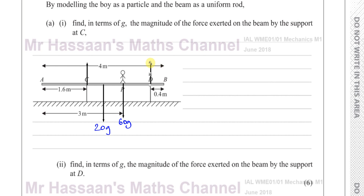We're only considering the forces acting on the beam itself. Some people ask about the reaction between the boy and the beam — but we only consider forces acting on the beam: the weight of the boy, the weight of the beam, and the reaction forces of the supports on the beam. We don't include forces on the supports or forces on the boy.